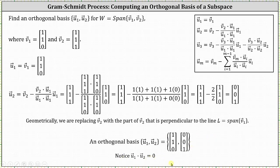Before we take a look at this graphically, if we go back to vector U sub two: geometrically, we replace vector V sub two with the part of vector V sub two that is perpendicular to the line equal to the span of vector V sub one. So now let's take a look at this graphically.